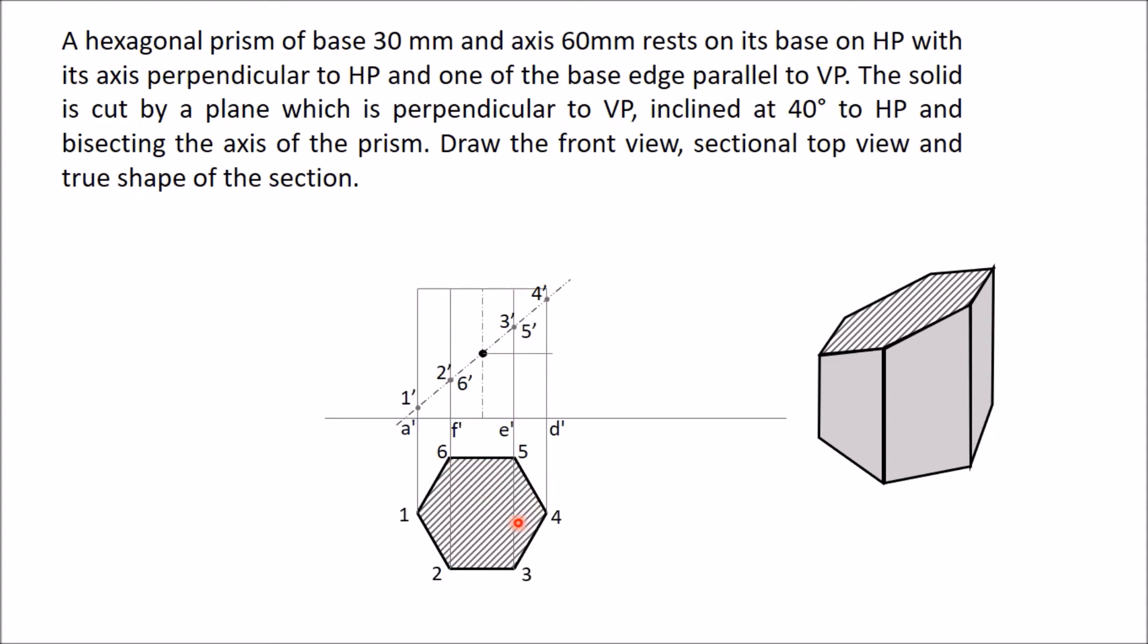Now to get the true shape of the section, you have to project this section in a plane which is parallel to the section plane. For that, you have to draw an XY line which is parallel to this section plane. Instead of drawing this XY line again, I am taking one line which is parallel to the XY line and joining 1 to 4. So I am drawing this line 1-4, which is parallel to this section plane.